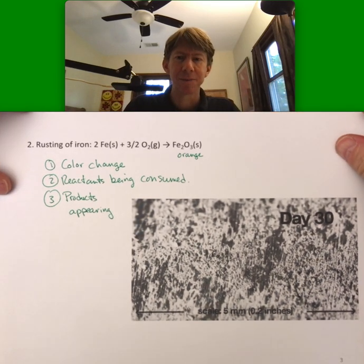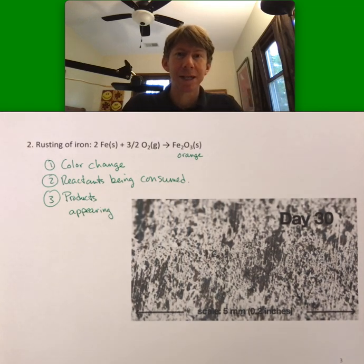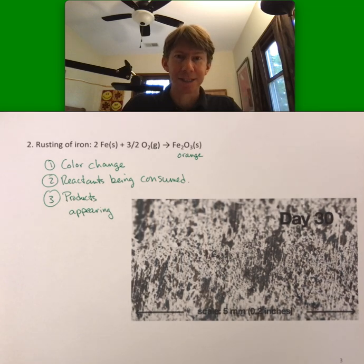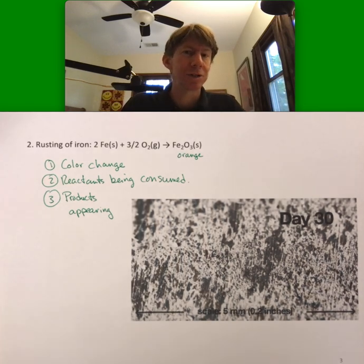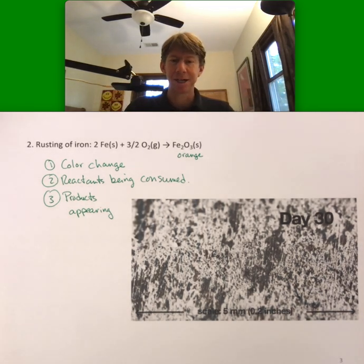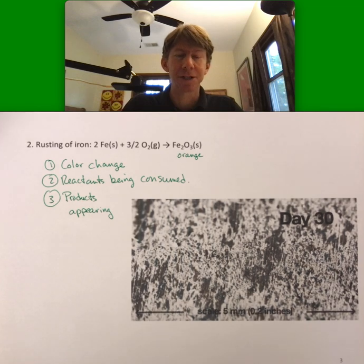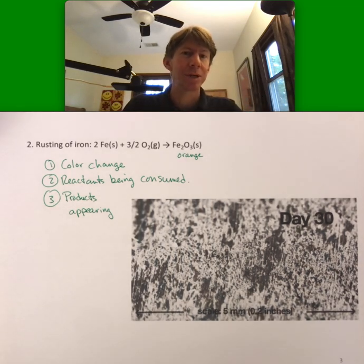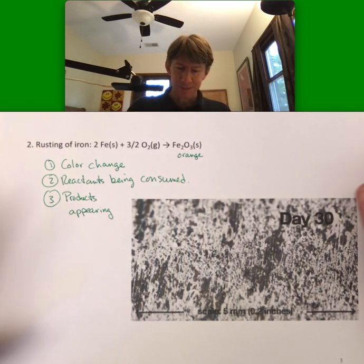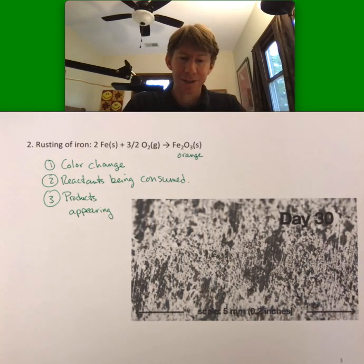We've hit most of the evidence types now. It's important to know when a chemical reaction has occurred, and there's evidence that is usually visible or detectable by your senses — you can see it or feel heat. Chemical reactions can also involve taste, though we never taste anything in our labs. And that's the evidence of chemical reactions.